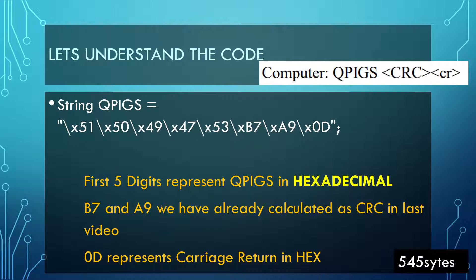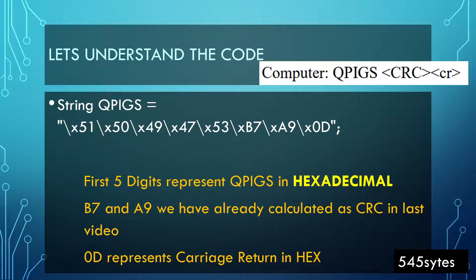I do suggest that if you want to master this, try to convert QPIGS into hexadecimal using Microsoft Excel. I showed that in video number 8 around the 20-minute mark, so you can watch that again and try to convert QPIGS into hexadecimal. You will get these values: 50, 51, 49, 47, 53. Once you have these values, you add backslash-x to tell the Arduino you're going to send the number or text in hexadecimal form.